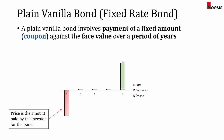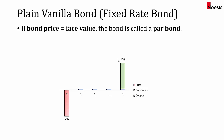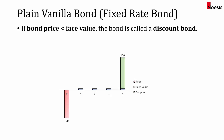Now let's put some numbers in. There are three types of bond classifications depending on the price versus the face value. First, if the bond price is the same as the face value — in this case the face value is $100 and the price is also $100 — the bond is called a par bond. If the bond price is greater than the face value, the bond is called a premium bond. And if the bond price is less than the face value, the bond is called a discount bond.